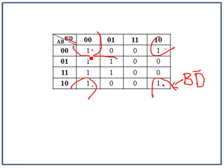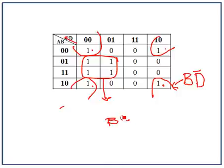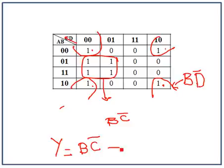Now we have another group — we can create a group of 4 here, and that will be B̄·C. So this whole KMAP can be represented by Y equals B̄·C or B̄·D̄.